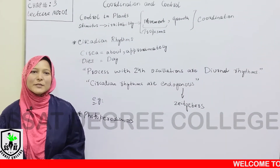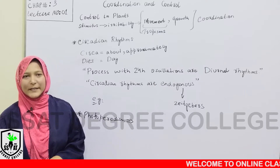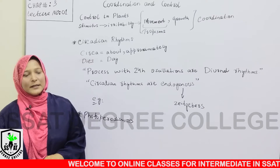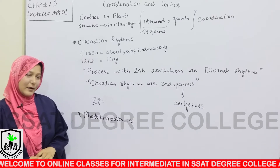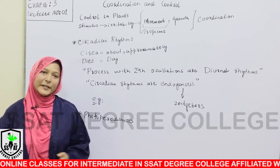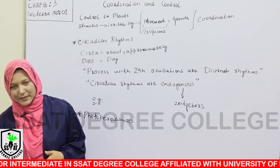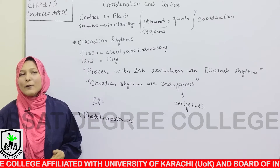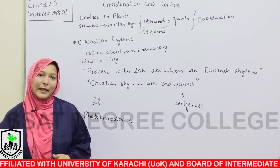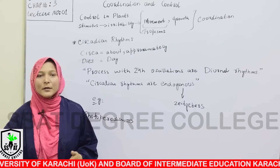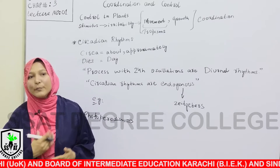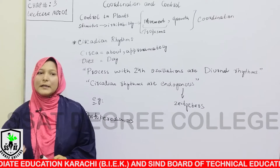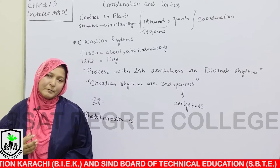Welcome students, today we are going to start our third chapter: Coordination and Control. This is our first lecture from this chapter. This chapter covers the scheme of coordination and control in plants and animals, but we are going to concentrate on the botanical side — studying how plants control their organs and coordinate them to help in movement and growth patterns.